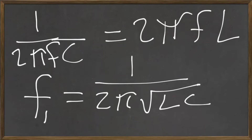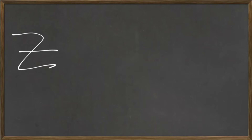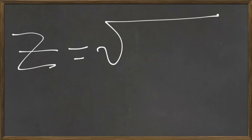This frequency is the resonant frequency — that's when the reactances of the capacitor and inductor are equal. The resonant frequency is where you'll get either the maximum output voltage of a voltage divider in an RLC circuit, or the minimum output voltage, depending on whether the resistor comes first in the series or the inductor and capacitor come first.